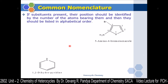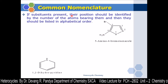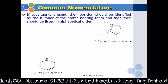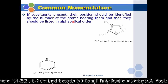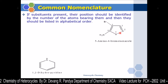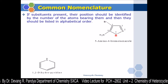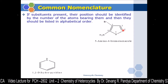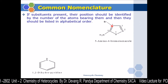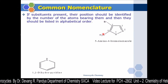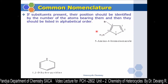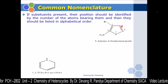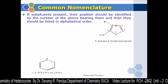When substituent groups are present, their positions should be identified by the number of the atoms bearing them, and then listed in alphabetical order. For example, here two heteroatoms are present — oxygen and nitrogen — so oxygen is given priority and numbering starts with oxygen at position one, then nitrogen at two, three, four, five. At the fourth carbon there is bromine, and at the fifth carbon there is an amine group. Since amine comes first alphabetically: 5-amino-4-bromoisoxazole.